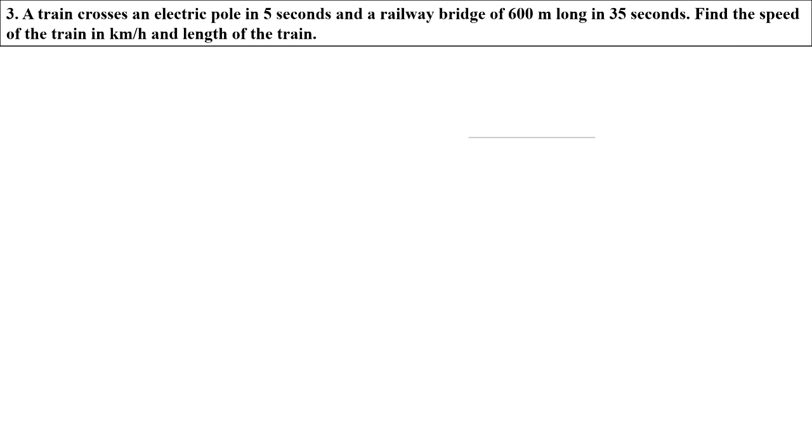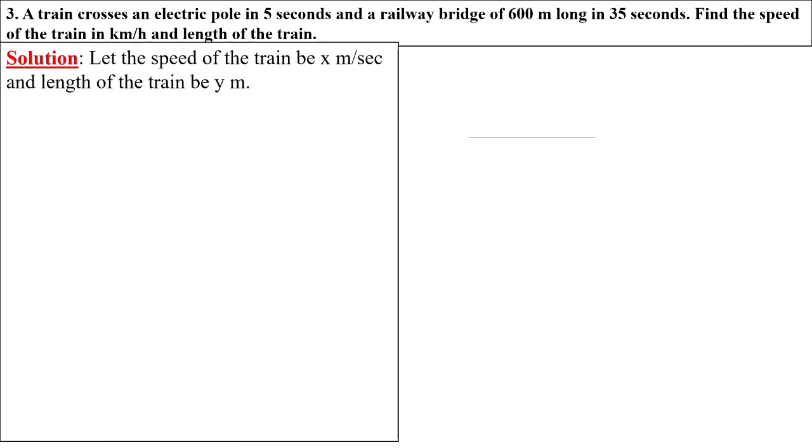Now our solution is: Let the speed of the train be x meters per second. We are taking meters because the length of the bridge is given in meters, and the length of the train be y meters. We'll use the formula speed equals distance upon time.